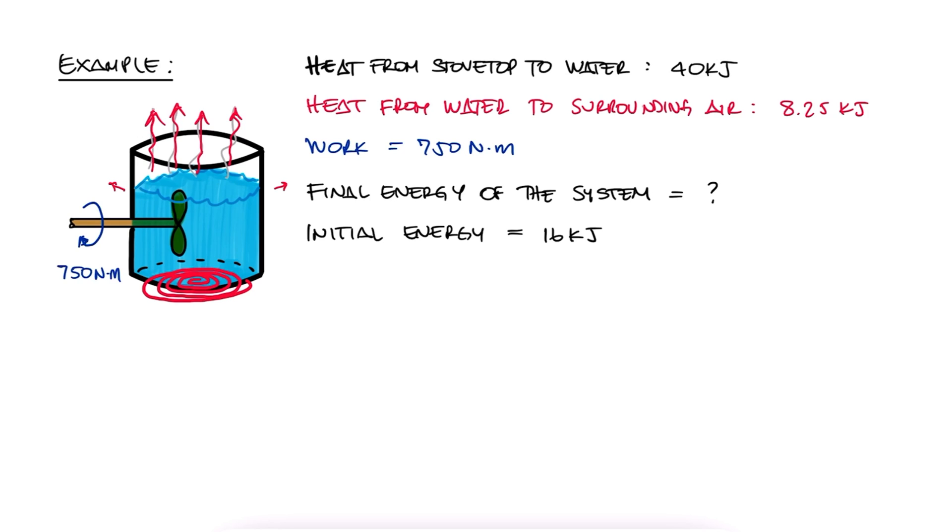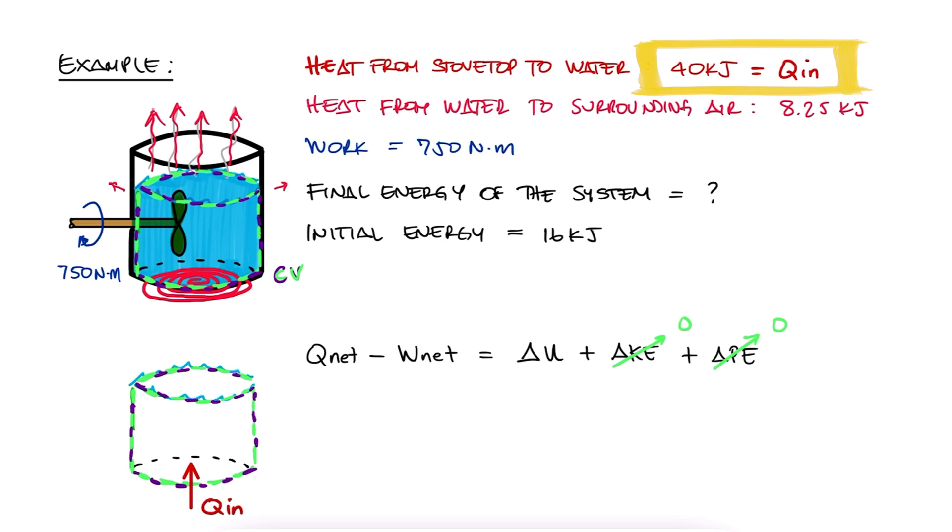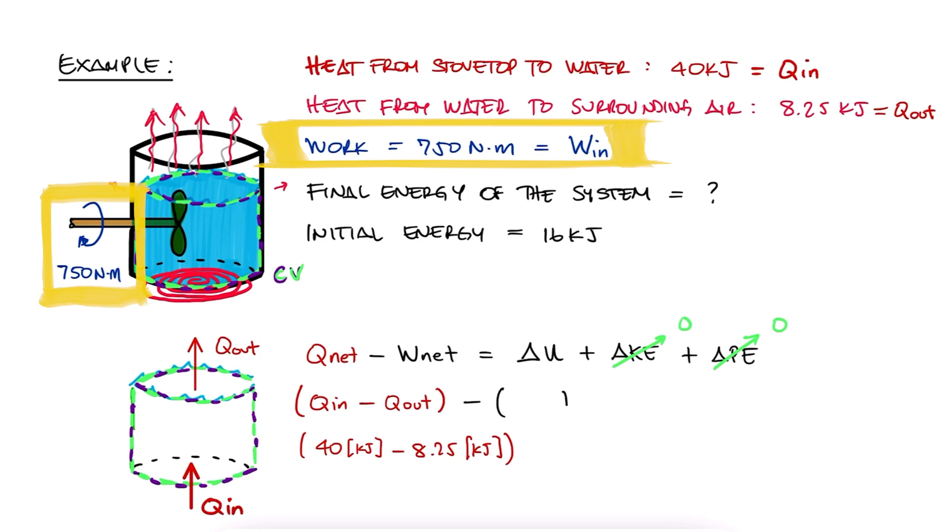Remember to pause here to solve this problem yourself before watching the solution up next. Using the conservation of energy equation, or in other words, the first law of thermodynamics, on a control volume that only takes into consideration the water inside the pot, we see that we don't have any changes in potential energy, and that any macroscopic changes of kinetic energy are probably negligible. We do know that there is heat coming in, and we know that heat coming in is positive. We have heat coming out, and heat coming out is negative. We also have work coming into the system, or being done to the system, and this is, by convention, considered negative.